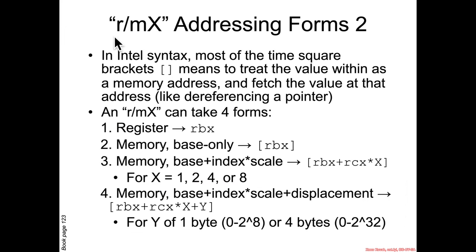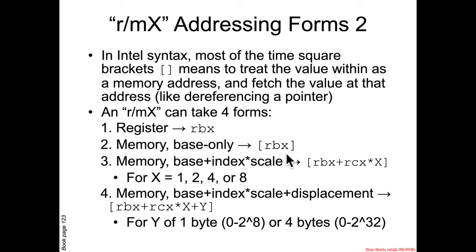So what is an RMX form? It is a way to specify either a register or a memory value — 8, 16, 32, or 64 bits long. In Intel syntax, square brackets mean to treat the value within as a memory address, fetch the value from that address, and pull it out — like dereferencing a pointer. So RMX could be a plain register like RBX, or a square bracket form where you take the value in RBX, treat it as a memory address, dereference it, and pull the value out from that address.